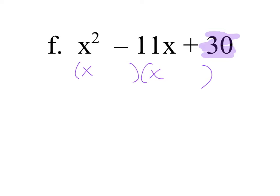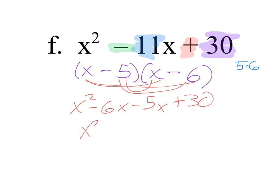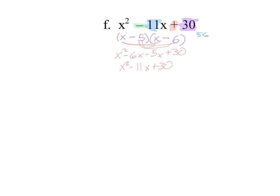For x squared minus 11x plus 30, I need factors of 30 that add to 11. Factors of 30: 5 and 6 — 5 plus 6 is 11; 3 and 10 — 3 plus 10 is 13. So 5 and 6 it is. The first sign tells me the operations are both subtractions. FOIL check: x squared minus 6x minus 5x plus 30, which gives x squared minus 11x plus 30. That's it for that page — moving on.